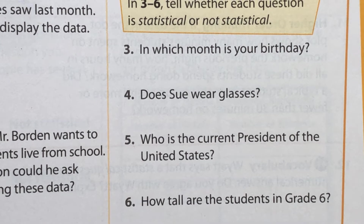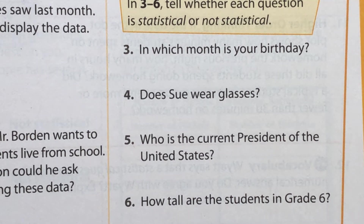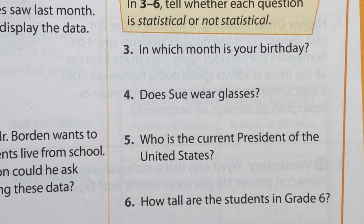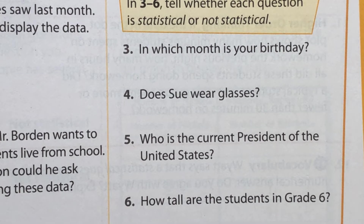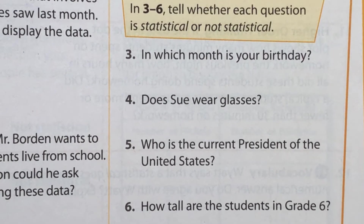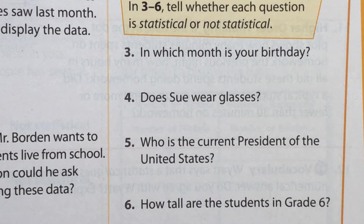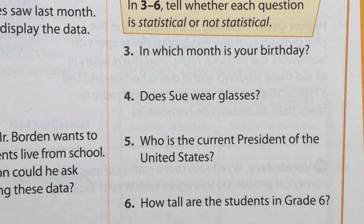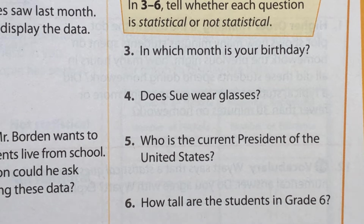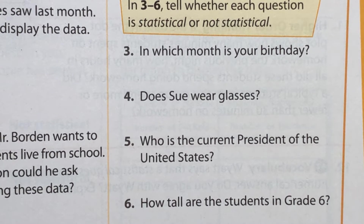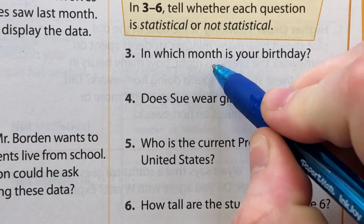If it's not statistical, it doesn't follow that definition. Number three says: 'In which month is your birthday?' Are you going to get one answer for that? No — people have birthdays in a lot of different months. Some people may share a birthday month, like I share March with probably a lot of other people, but the answers aren't all going to be March. You'll get February, April, December — a variety of different answers. So this is statistical.